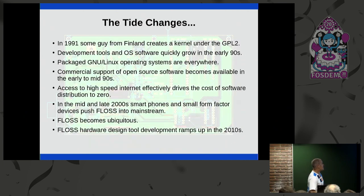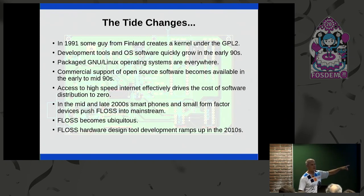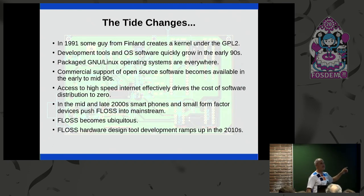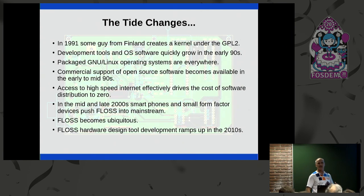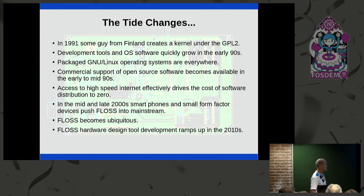We still lacked a kernel. So in 1991, some guy from Finland created a kernel under the GPL. That really spurred development — things really took off. Within a couple of years, by the mid-nineties, there were probably a dozen packaged distros of Linux: Red Hat, Debian, Mandrake, Susie, and a whole bunch of others. You didn't even need to do any compiling anymore — you could just download, install, and run Linux.